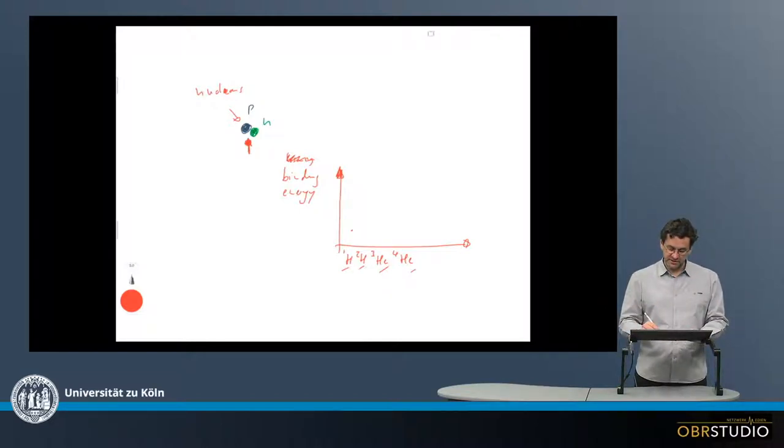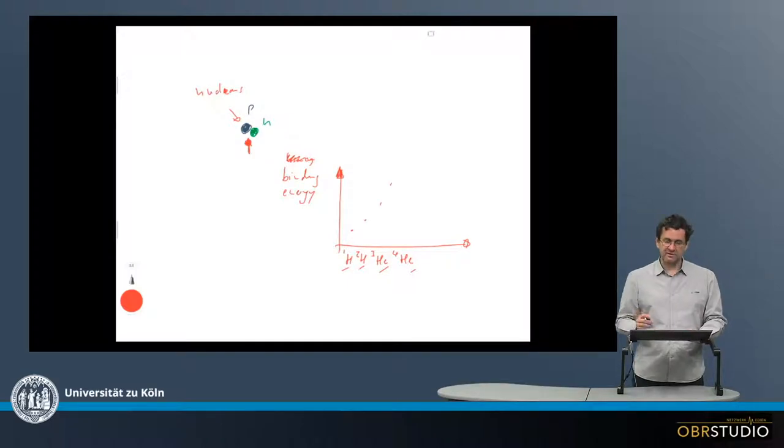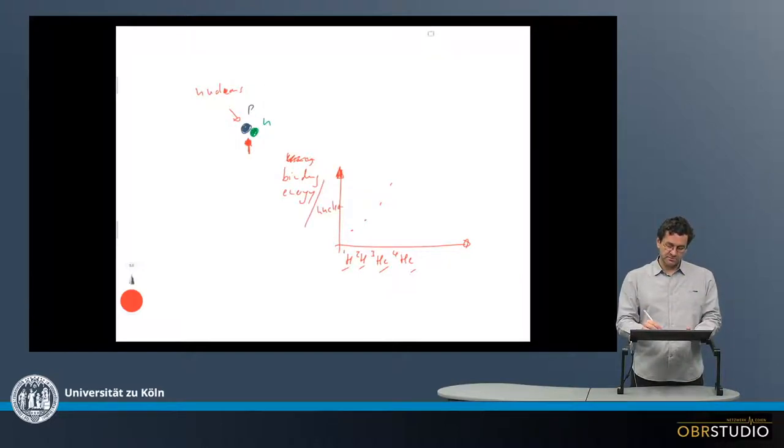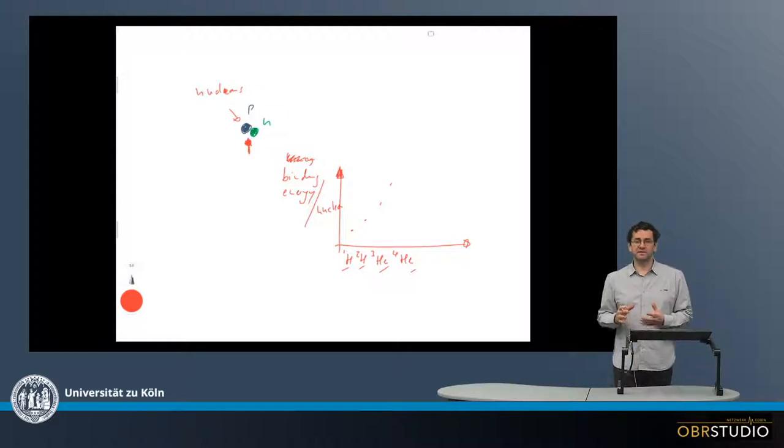Now if I plot here the binding energies, it looks something like this. So it's increasing with more nucleons in the core of an isotope. And the binding energy on the y-axis is not the binding energy of the entire core, but it's usually the binding energy of a single nucleon.